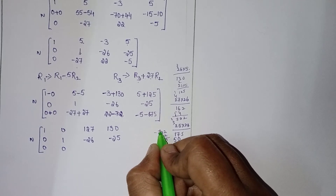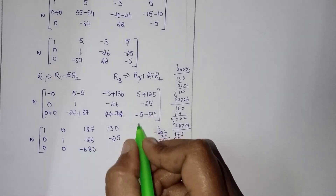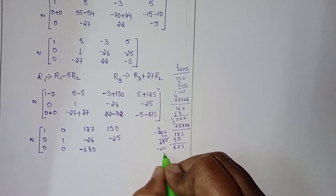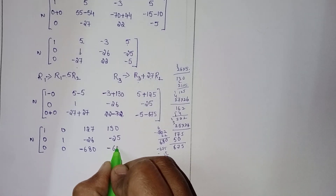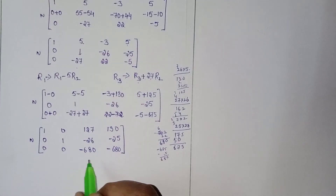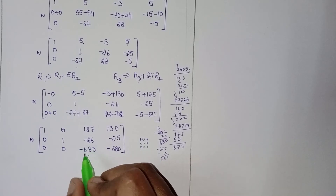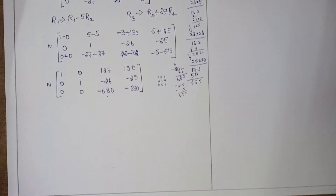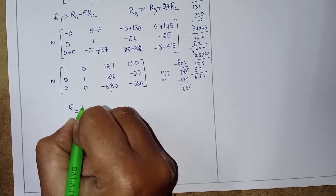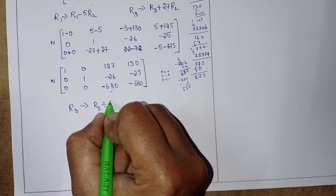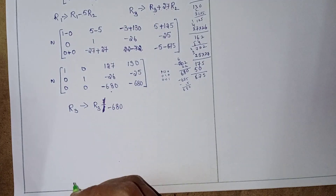Now I want a 1 in the third diagonal position. That's why I will divide R3 by −680. Write R1 as it is and R2 as it is. In R3: 0 divided by −680 is 0; 0 divided by −680 is 0; and −680 divided by −680 is 1. So R3 becomes [0, 0, 1, ...].